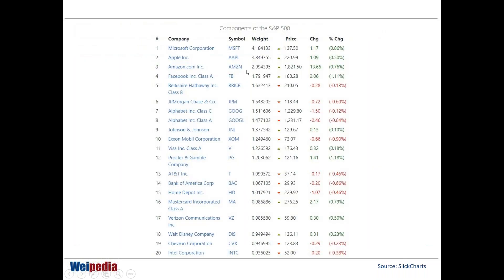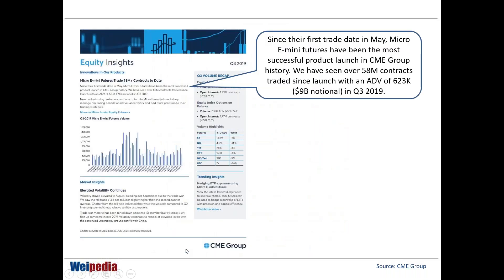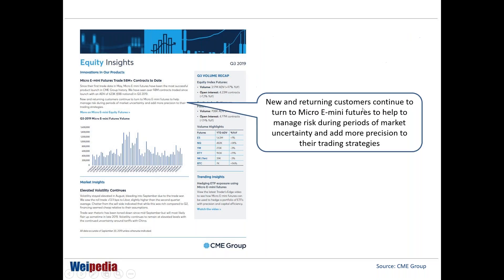Micro e-mini was launched just in May, but it already became the most successful product for CME itself. When you trade an index, you have to understand that you're trading a basket of stocks. When I say I'm trading the micro e-mini S&P 500, it means you're literally investing or trading a group of 500 companies. Since the first trade date in May, micro e-mini futures have been the most successful product launch in CME Group history — about 58 million contracts traded, equivalent to about 9 billion US dollars in notional value just in the third quarter alone.